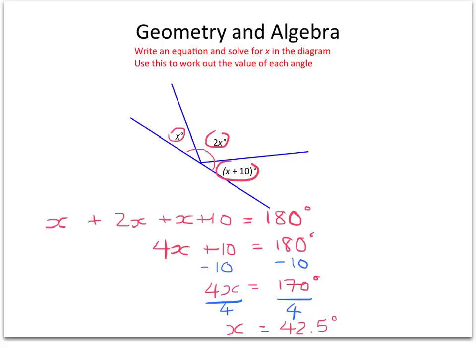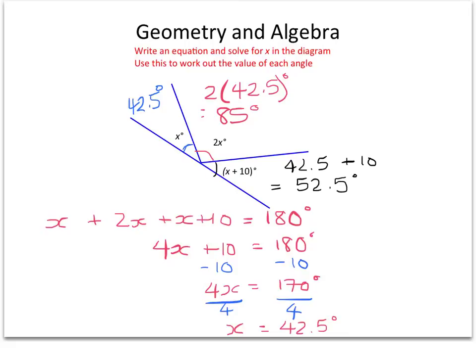So I can use this to work out the size of each angle here. So I'm just going to erase these marks. This first angle here, x is 42.5 degrees, obviously, because it's just x. The second angle here is 2 times x, so 2 times 42.5 degrees, which is 85 degrees. And the third angle here is x plus 10, so 42.5 plus 10 gives me 52.5 degrees. And there I've combined my knowledge of algebra with my knowledge of geometry to solve this problem.